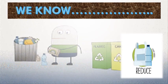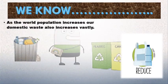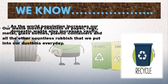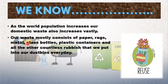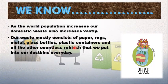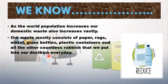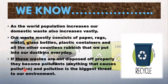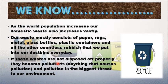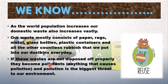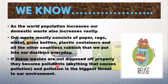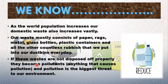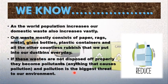Before that, let's review some things we already know. As the world population increases, our domestic waste also increases vastly. Our waste mostly consists of paper, rags, metal, glass bottles, plastic containers, and countless other rubbish we put into our dustbins every day. If this waste is not disposed of properly, it becomes a pollutant, making our environment dirty and causing pollution — the biggest threat to our environment.